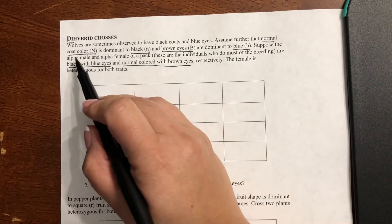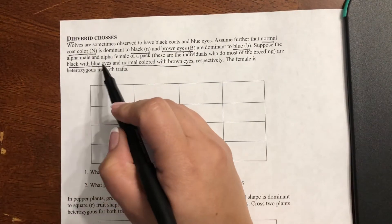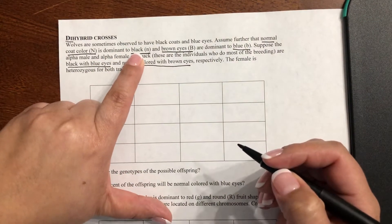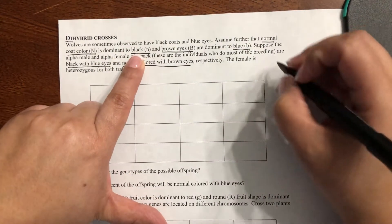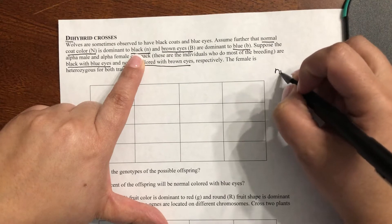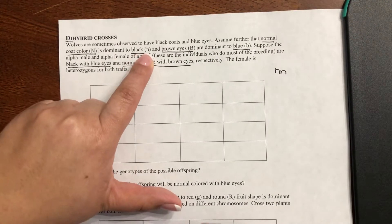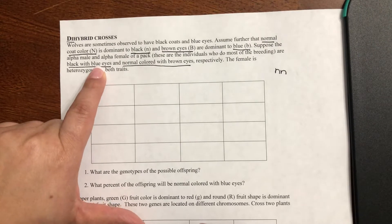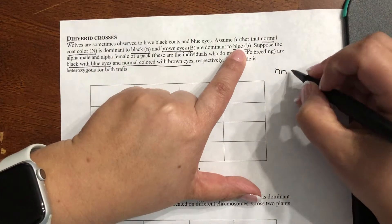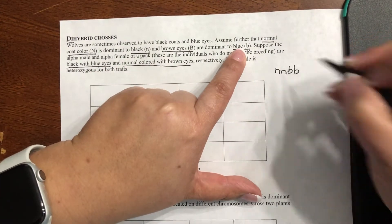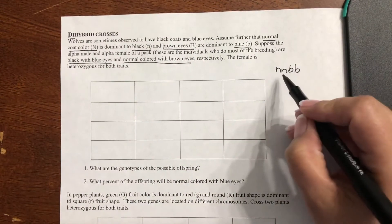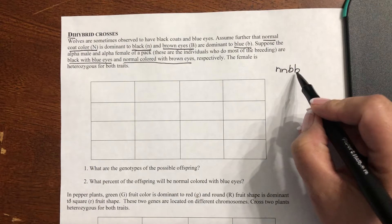We'll start with the alpha male. He's black with blue eyes. The only way a wolf is going to be black is to be lowercase n, lowercase n, because it is the recessive allele. The only way he's going to have blue eyes is, again, to be lowercase b, lowercase b. Notice this time, instead of having just one trait, I have both — the coat color and the eye color for the male.